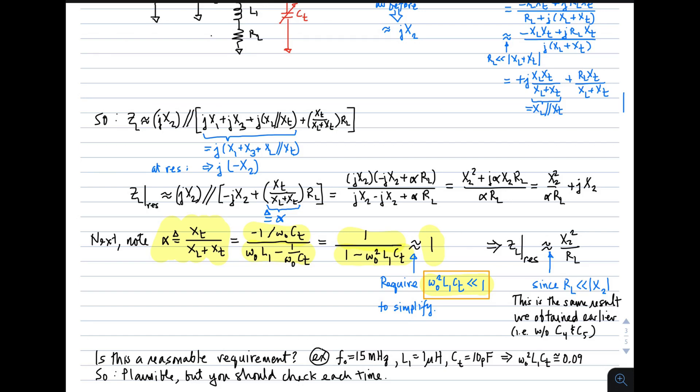If I make that assumption, then the output impedance looking out the emitter at resonance simplifies to just X2 squared over R sub L, since R sub L is much much less than magnitude of X2 as established previously. And this is the same result that we obtained earlier, that is before we added C4 and C5. So this is convenient. So again, we're choosing this simplification to make things simpler.